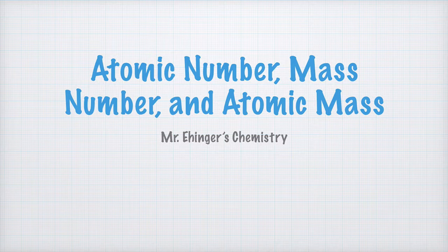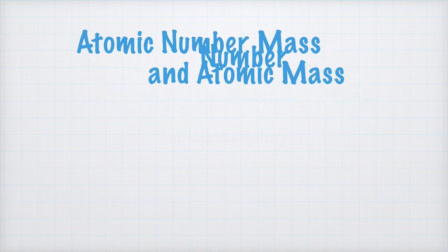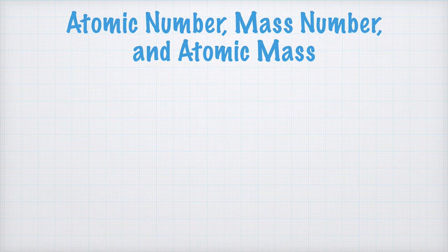Since you've learned a little about how the atom is made of protons, electrons and neutrons, we can go a little deeper into the mass of these building blocks and how you can tell from the periodic table. Because this video is all about atomic number, mass number and atomic mass. And we'll start directly with atomic number.